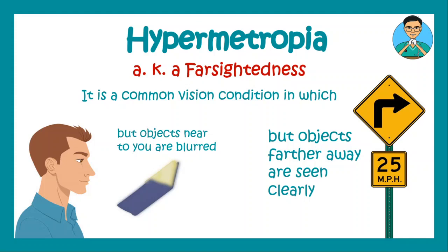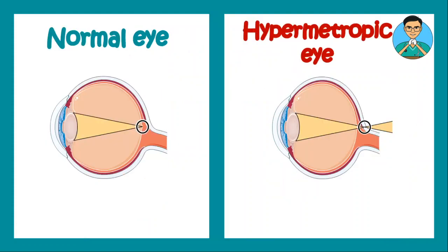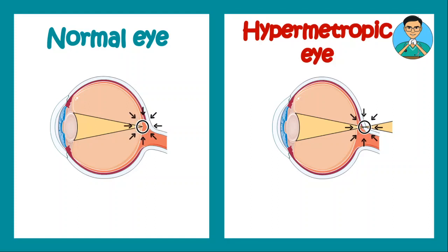Let us understand the optics behind such a condition. In a normal eye, the parallel rays of light that fall on the eye converge over the retina to form a sharp image. But in case of hypermetropia, due to several conditions, the parallel rays of light converge behind the retina, and on the retina they form a blurred image.